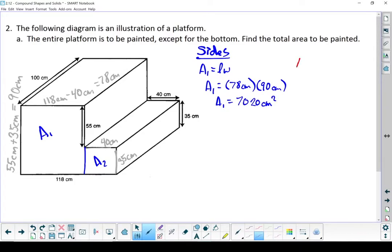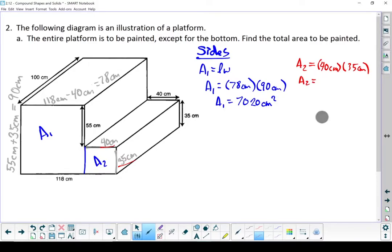Let's deal with the area of the second square. That's a little one on the bottom. Still length times width. Let's go 40 centimeters, that's this number right there, times 35 centimeters. Area of the second part is 1400 centimeters squared.